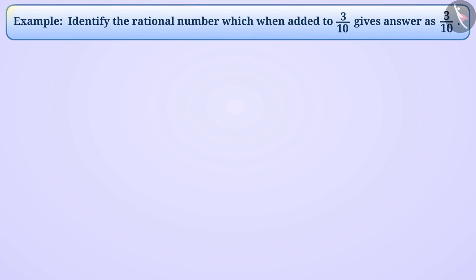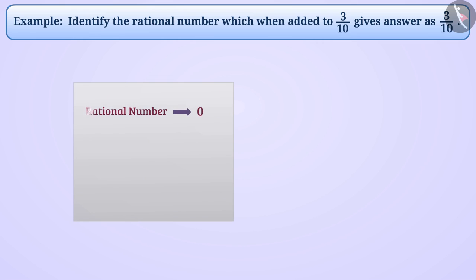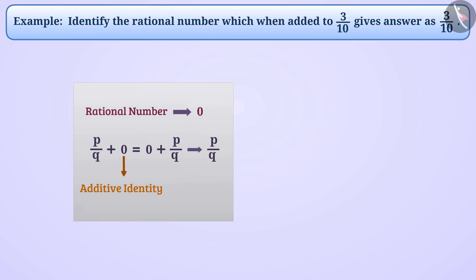Next example: identify the rational number which when added to 3 by 10 gives answer 3 by 10. We know that 0 is the only rational number which if added to any number makes no change in the value of the rational number. Therefore, for addition of rational numbers, 0 is the additive identity. If we add 0 to 3 by 10, then there is no change in the rational number 3 by 10. The required rational number is 0.